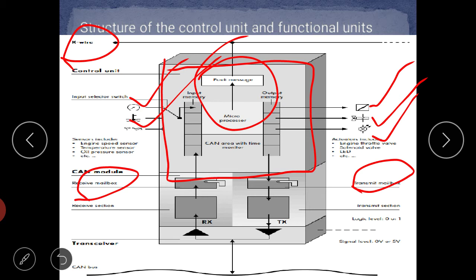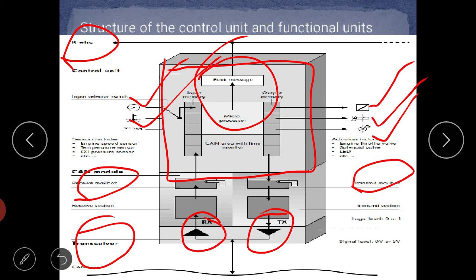The transceiver can then send it to the CAN wires. So, in the CAN module, it receives data from the microcomputer, prepares that data, and sends it to the transceiver. The transceiver converts the data into electrical form and feeds it to the CAN bus lines. The structure is: microcontrol unit, CAN module, and transceiver. The microcomputer receives the data and sends output signals to the CAN controller. The CAN controller prepares the data and feeds it to the transceiver, which converts it to electrical signals and sends it to the CAN bus lines.